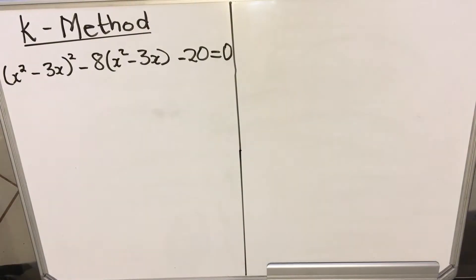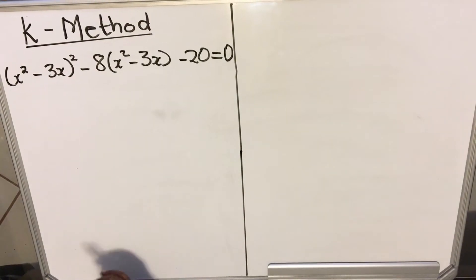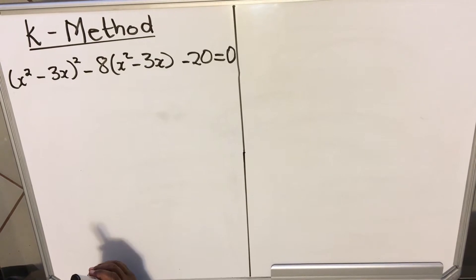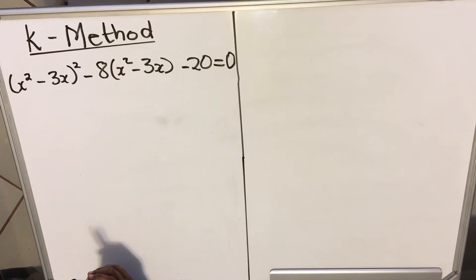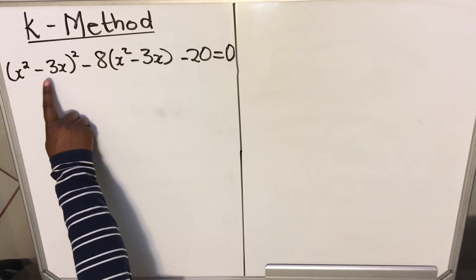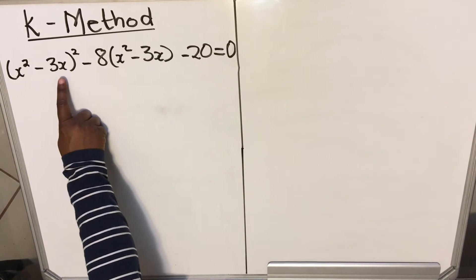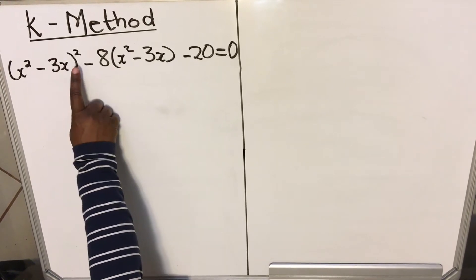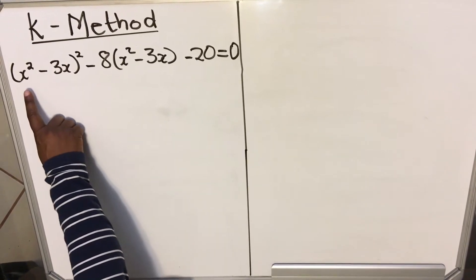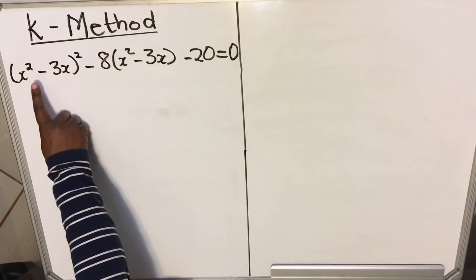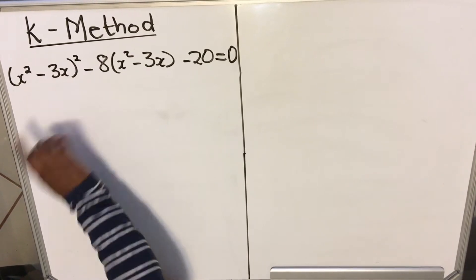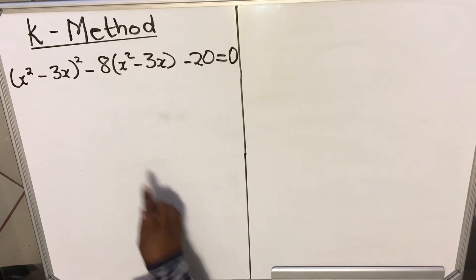Hello Great Elevens. This is a method of solving a complex equation. When you look at this equation, you have x squared minus 3x, everything squared. If you multiply it out you'll end up with x to the power of 4 — that times that times that — then it becomes complicated.